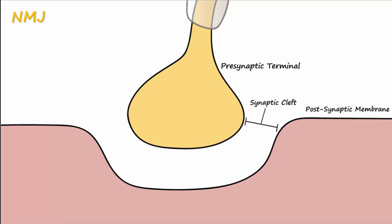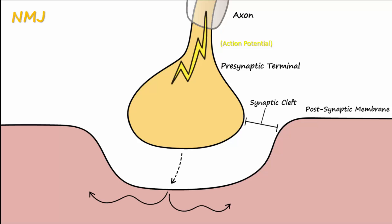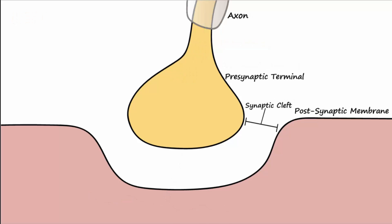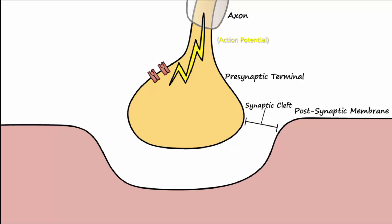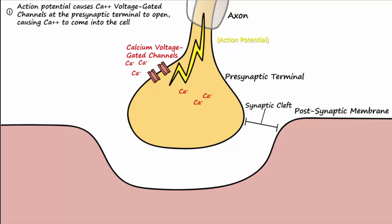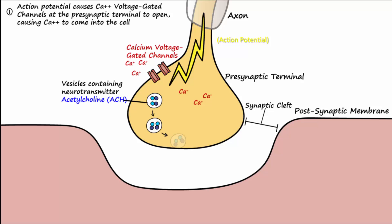An action potential traveling down the axon of the neuron needs to be able to generate an action potential in the membrane of the muscle cell. This happens in five major steps. First, an action potential travels down the axon of the neuron and reaches the presynaptic terminal. It causes calcium voltage-gated channels in the presynaptic terminal to open, allowing calcium ions to enter the cell. The influx of calcium allows vesicles containing the neurotransmitter acetylcholine, or ACh, to be released into the synaptic cleft.